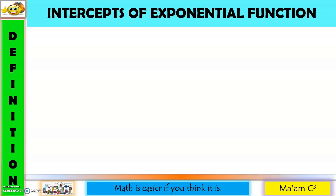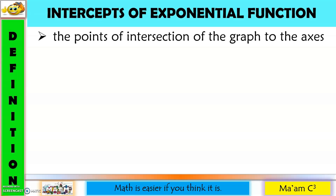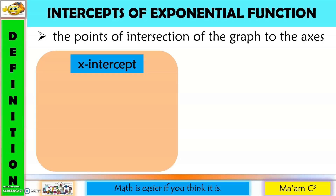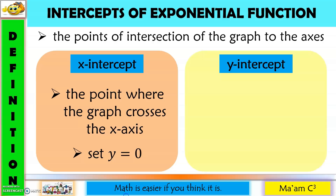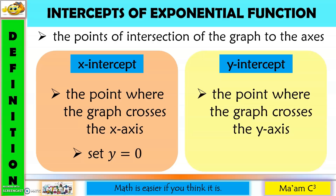Now let's discuss the intercepts of exponential functions. These are the points of intersection of the graph with the axes. The x-intercept is the point where the graph crosses the x-axis — set y equal to zero to find it. The y-intercept is the point where the graph crosses the y-axis — set x equal to zero to find it.